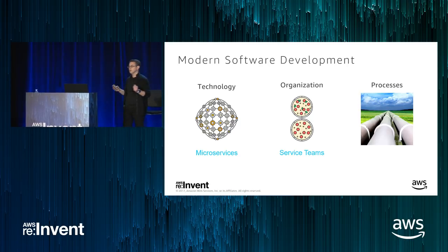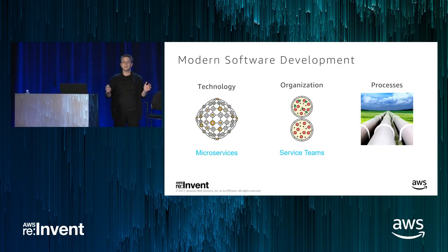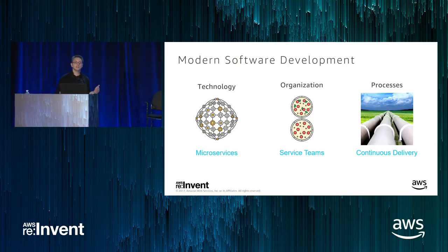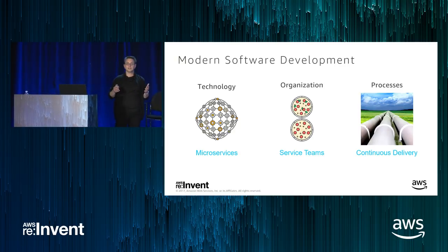On Amazon, we call them two pizza teams — teams sized no larger than two pizzas can feed, between eight to twelve people. These are small but hungry teams. We also knew that if these teams were going to develop and operate independently, we needed to provide them with the right tools. So we started to develop continuous integration, continuous deployment, and continuous delivery tools — tools that after being hardened within Amazon for over ten years, we released as services to customers on AWS: CodePipeline and CodeDeploy.